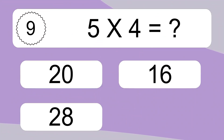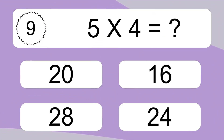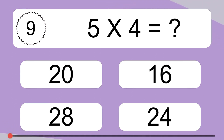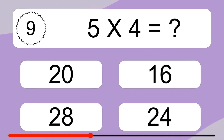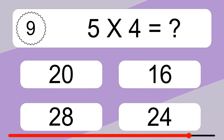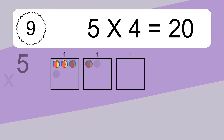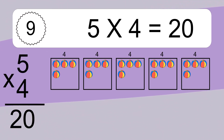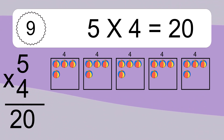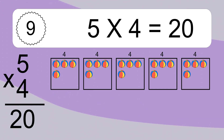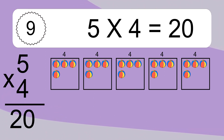5 times 4 equals what? 5 times 4 equals 20. We have 5 boxes, and each box has 4 colorful balls inside. If you count all the balls in all the boxes together, you will have 5 times 4 balls. This equals 20 balls.